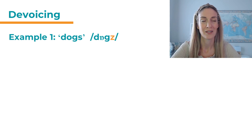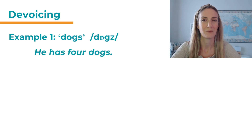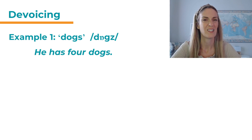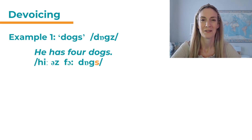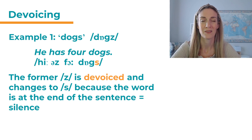Here is an example: the word 'dogs'. This is a word in the plural. We have a plural 's' and that plural 's' would usually be pronounced with a 'z' — a voiced sound — because 'g' is also voiced. But listen carefully: 'He has four dogs.' The 's' is unvoiced. What happened? The former 'z' is devoiced and changes to 's' because the word is at the end of the sentence and there's silence following. This is an example of devoicing of a final consonant.